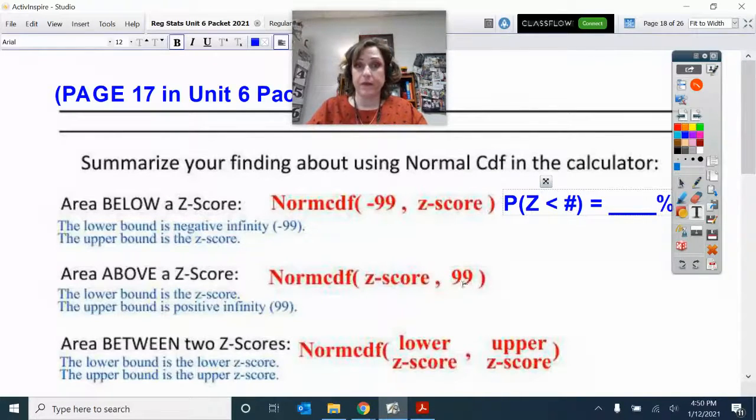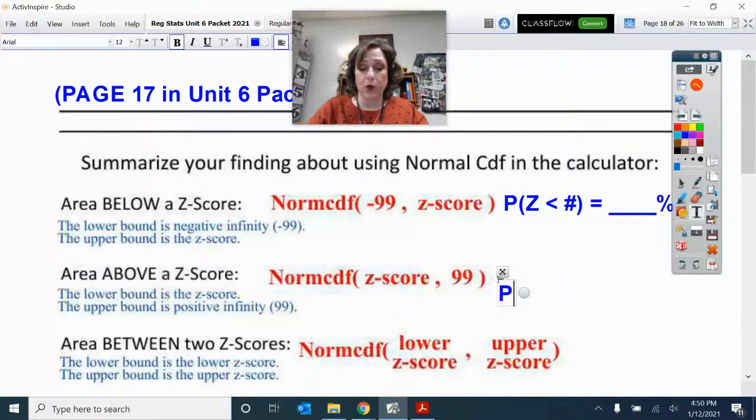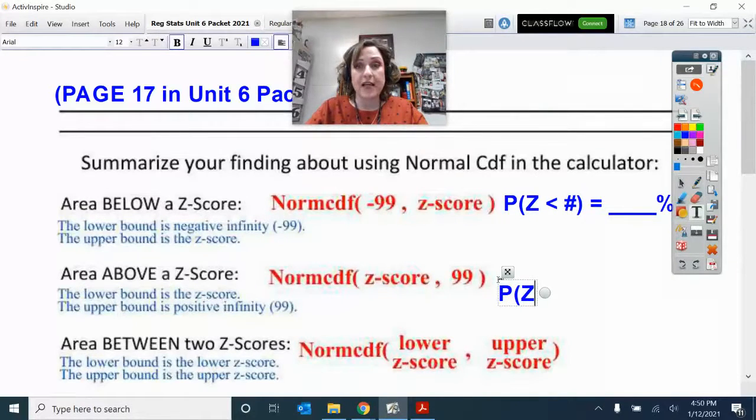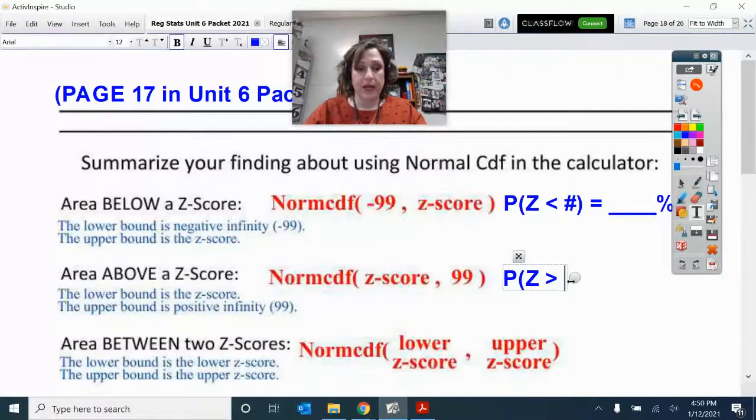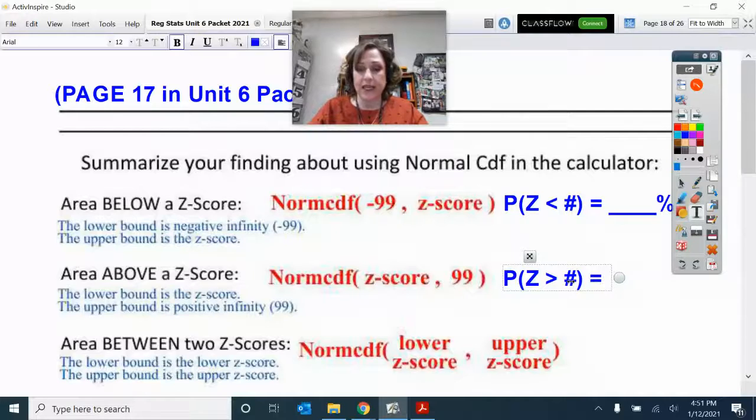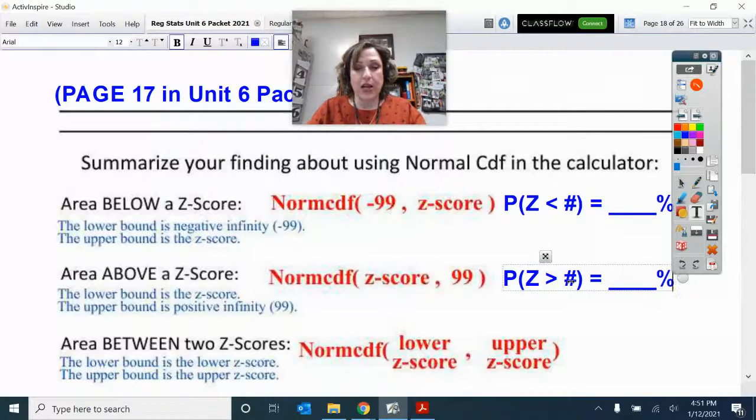Let's go above. The probability notation for that looks like this: the proportion of observations or the percent of the Z scores—we want to go above, so greater than. That's going to point to the right because we're going above a particular number, and then that equals our number as a percent.